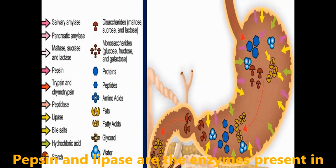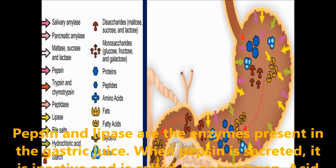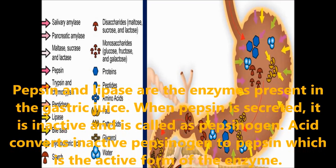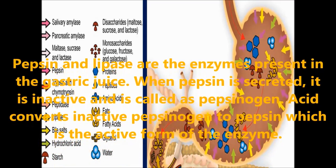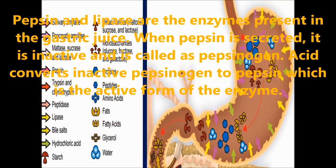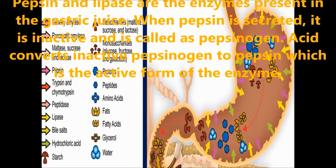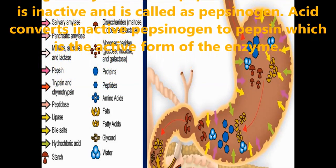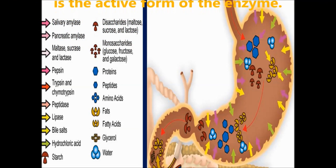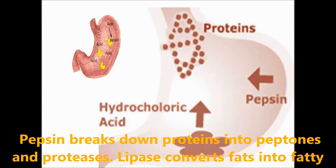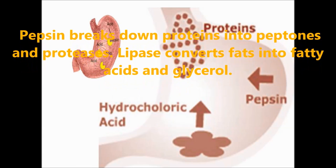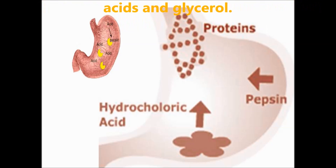Pepsin and lipase are the enzymes present in the gastric juice. When pepsin is secreted it is inactive and called pepsinogen. The acid converts inactive pepsinogen to pepsin, the active form of the enzyme. Pepsin breaks down proteins into peptones and proteoses. Lipase converts fat into fatty acids and glycerol. In children, another enzyme called rennin is secreted in the stomach, which causes curdling of milk, and this enzyme disappears as the child grows.